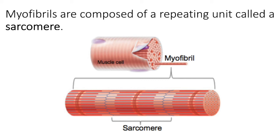This repeating unit is called a sarcomere, and it is responsible for muscle contraction. Remember how skeletal muscle tissue is characterized by a striated appearance? It's because of this overlapping of the thick red fibers and the thin blue fibers that gives muscle tissue its striated, or striped, appearance.